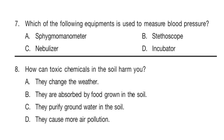Question 7. Which of the following equipment is used to measure blood pressure? The answer is option A: Sphygmomanometer. Question 8. How can toxic chemicals in the soil harm you? The answer is option B: They are absorbed by food grown in the soil.